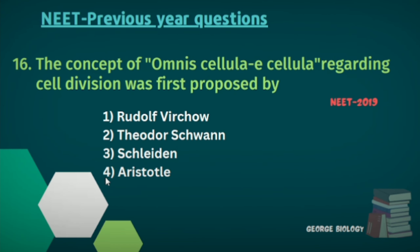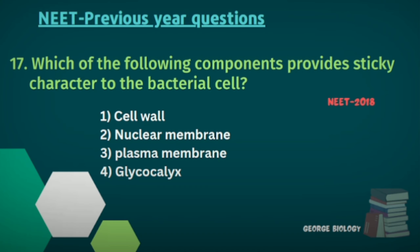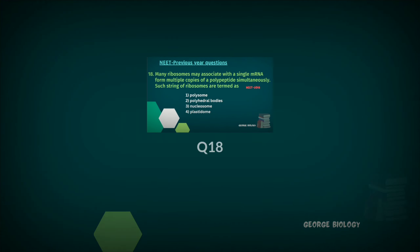Question sixteen: The concept of omnis cellula e cellula regarding cell division was first proposed by whom? The suitable answer is glycocalyx.